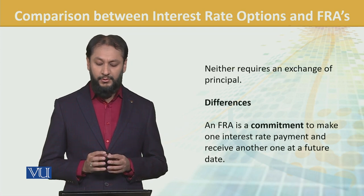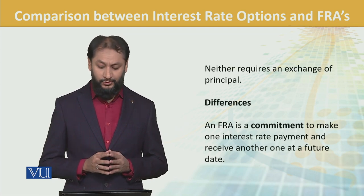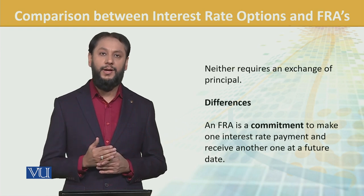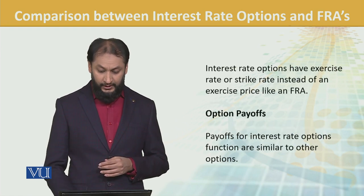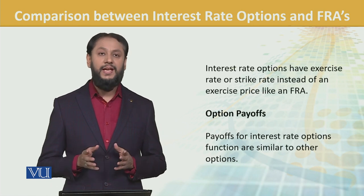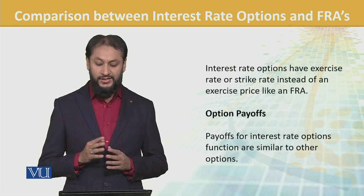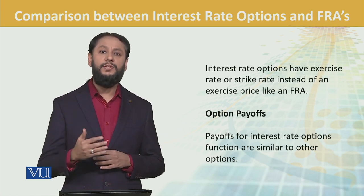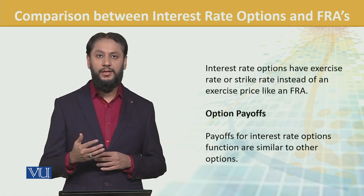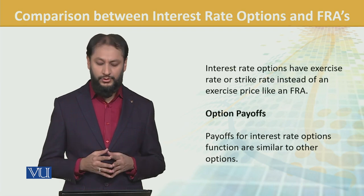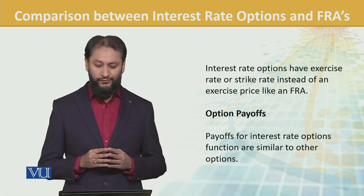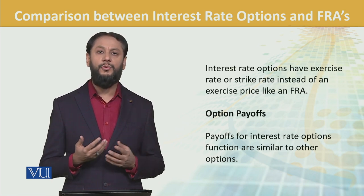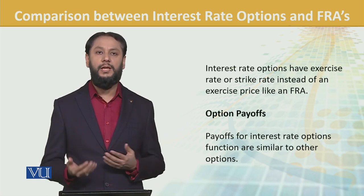The key difference is the commitment factor: a FRA is a commitment to make one interest payment and receive one in the future. Interest rate options have an exercise rate or strike price instead, and the payoff depends on whether the option is favorable or not.